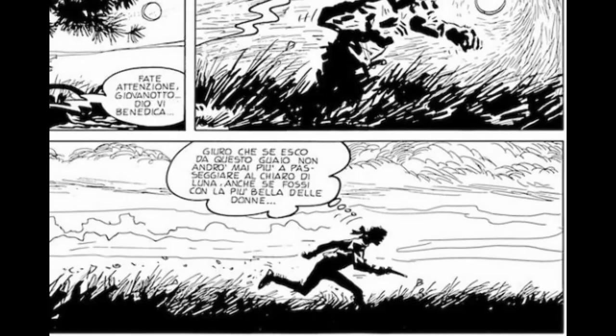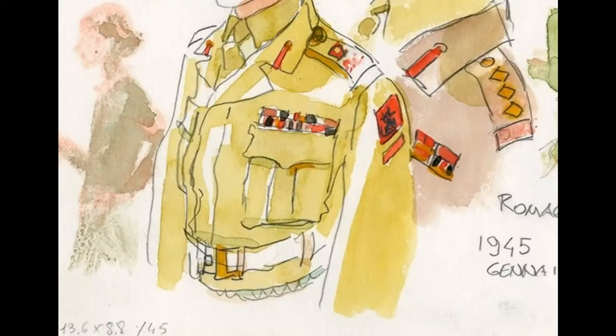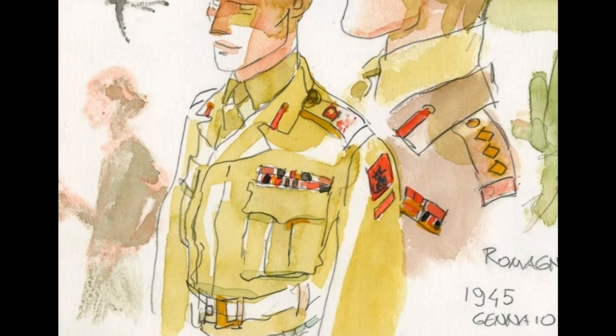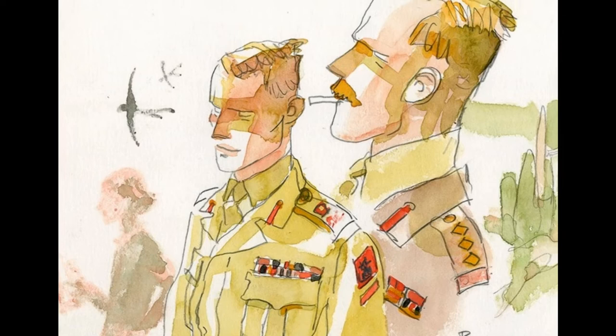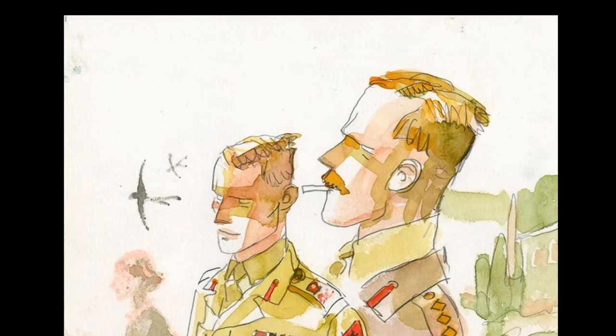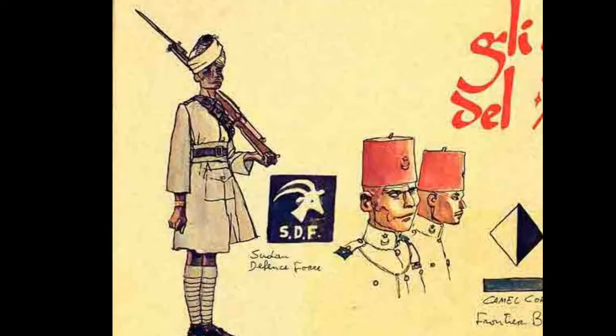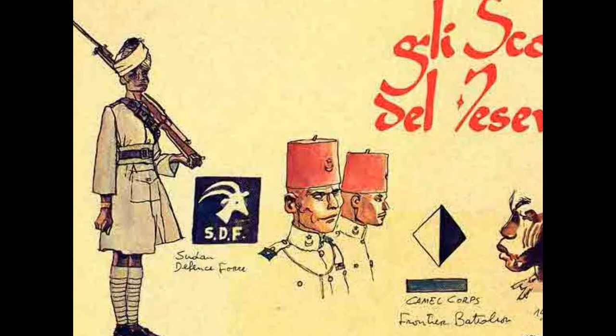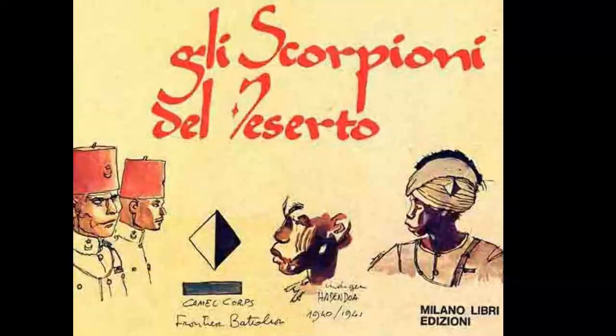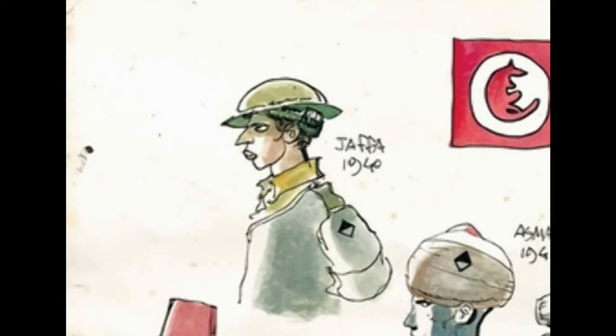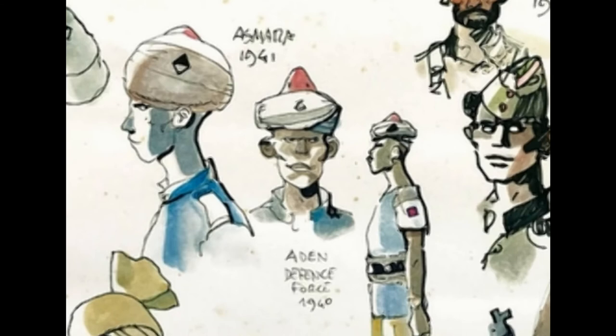Which brings us to another aspect that links all Pratt's works: military conflict. As a background of all his stories, Pratt uses military conflict — wars, revolutions, or power struggles. All the stories of Corto Maltese, his most famous character, are set before, during, or after World War I and the conflicts that spewed all over the world as a result. Another example is The Scorpion of the Desert, set in the middle of the Second World War. This type of context gives Pratt the chance to explore nature, but also the relationships between the characters and how they react to history happening in front of their eyes.